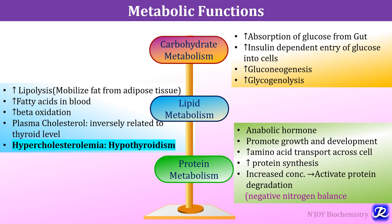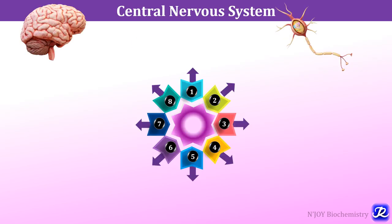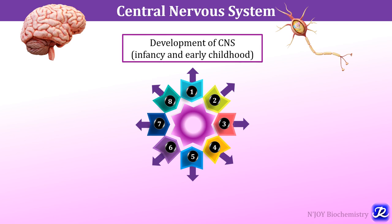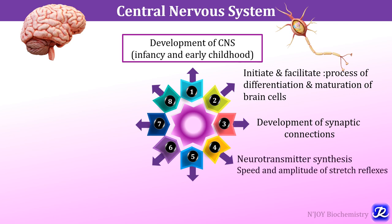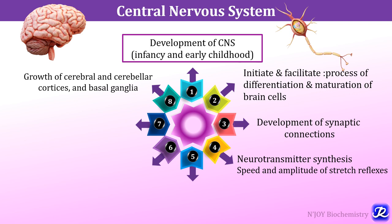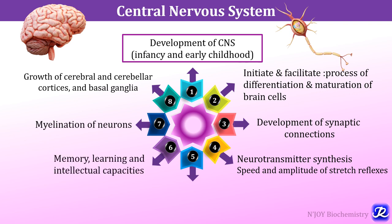The effects of thyroid hormone on the central nervous system include development of the CNS in infancy and early childhood. It initiates and facilitates differentiation and maturation of brain cells, development of synaptic connections and neurotransmitter synthesis. It also regulates speed and amplitude of stretch reflexes. Growth of cerebral and cerebellar cortices and basal ganglia, myelination of neurons, memory, learning and intellectual capacities are all influenced by thyroid hormones.